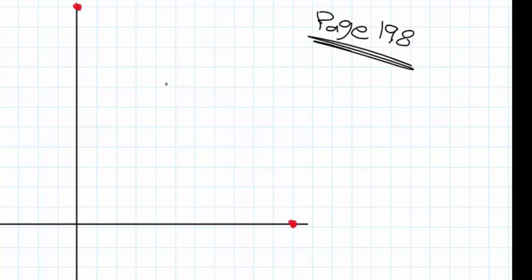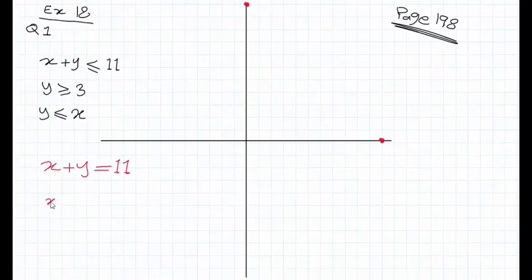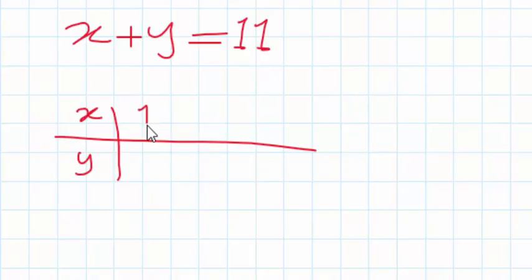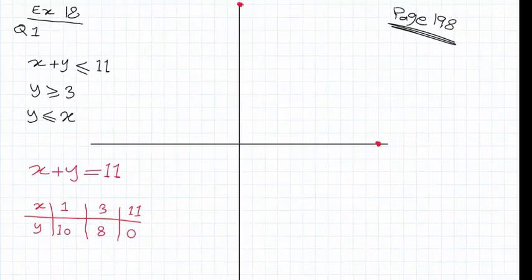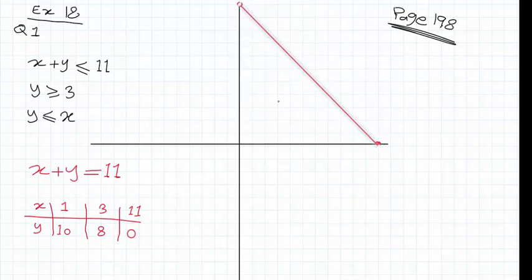If you want to do it the ordinary way, choose some values for X and work out their Y's. For example, if X equals 1, then 1 plus Y equals 11, so Y equals 10. If X equals 3, then Y equals 8. If X equals 11, then Y equals 0. Plot these three points on the XY axis and join them with a straight line — you'll get the exact same line. Since the inequality has 'equal to', the line is a solid line, not a dashed line.